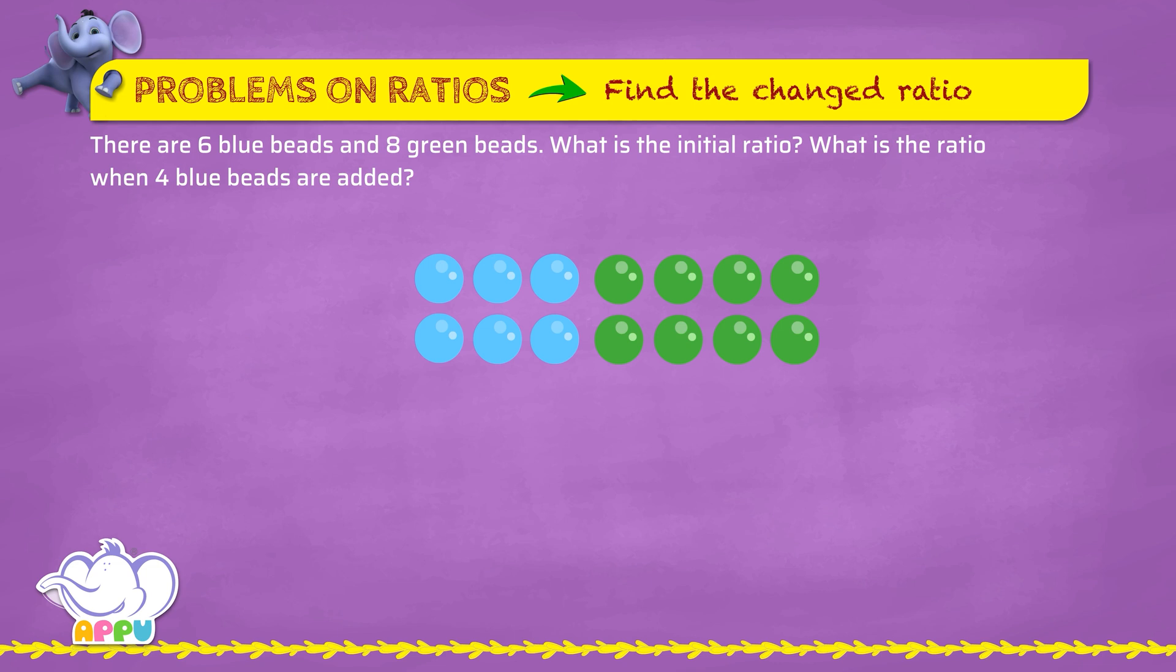There are six blue beads and eight green beads. Initial ratio of blue beads to the green beads is 6:8. Since two is a common factor, we divide by two. The initial ratio of blue beads to green beads is 3:4.